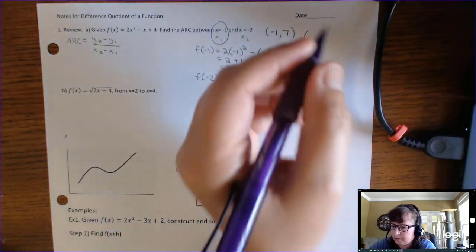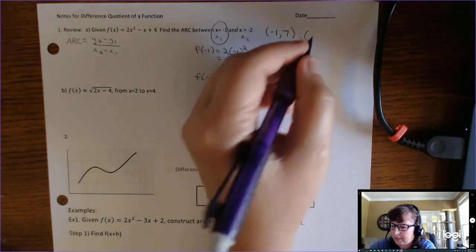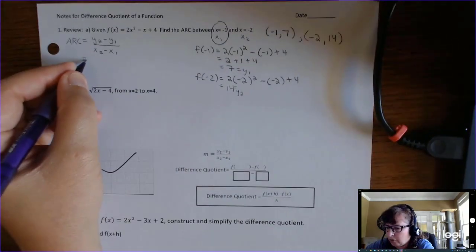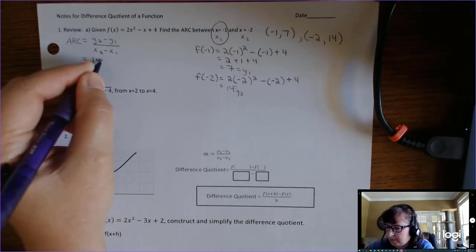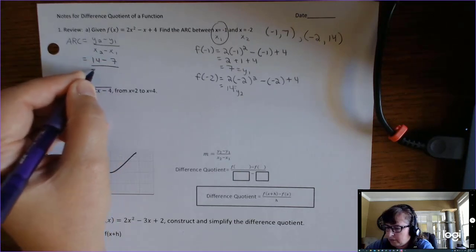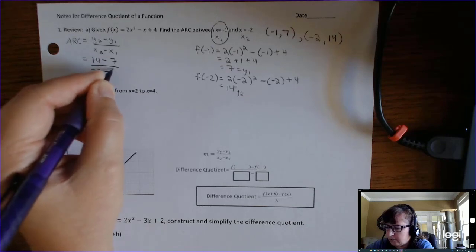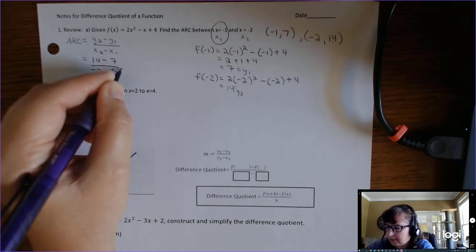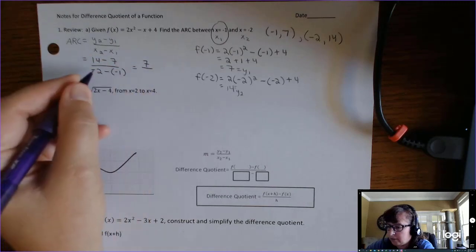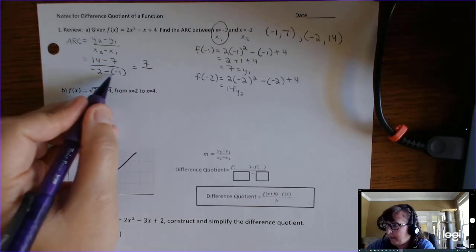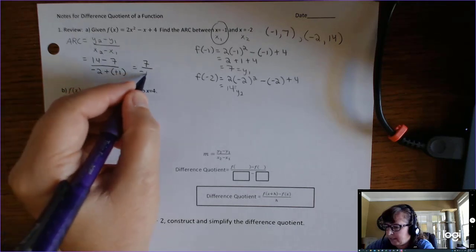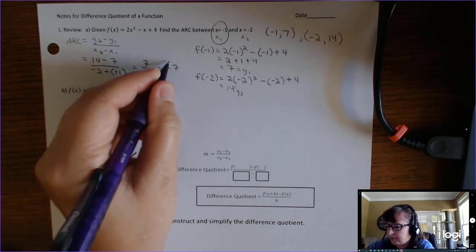Our two ordered pairs are negative 1, 7 and negative 2, 14. Plugging into the ARC formula: y2 minus y1 is 14 minus 7 equals 7, and x2 minus x1 is negative 2 minus negative 1, which is negative 1. So the ARC is 7 over negative 1, which is negative 7.